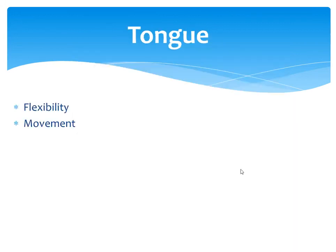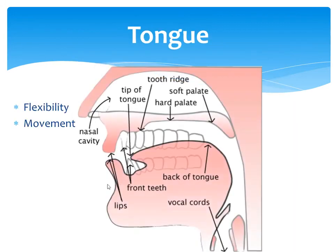The tongue is the most important organ of speech. This is because of the flexibility it has and because of the movement it has within the mouth cavity.